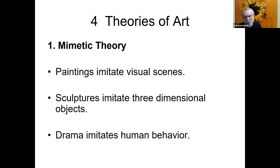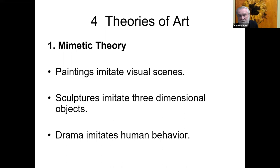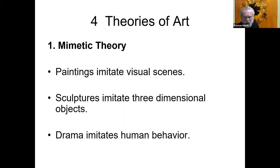The idea is that paintings are supposed to imitate visual scenes — flowers, landscapes, portraits. Sculptures are supposed to imitate three-dimensional objects. Dramas are supposed to imitate human behavior. These art forms — painting, sculpture, drama — are all supposed to be imitations of nature. Music was always a little bit difficult for this theory to account for, because it's not entirely clear what music is supposed to imitate. You could maybe admit there were pastoral symphonies that imitated forest sounds or birdsong, but it was always not a particularly easy fit.